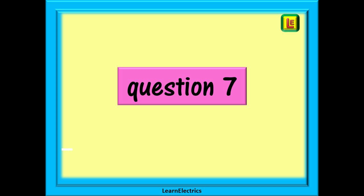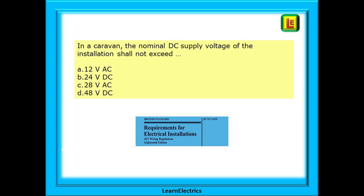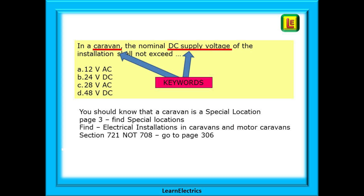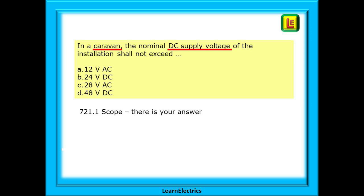Question 7 is next — a question on special locations. The question asks: in a caravan, the nominal DC supply voltage of the installation shall not exceed what? You should know that a caravan is a special location. Go to page 3 and find special locations — it will be shown as 'Electrical installations in caravans and motor caravans'. You are looking for section 721, not section 708. A caravan, section 721, is not the same as a caravan park, section 708 — many people make this mistake. Go to page 306. At the top of the page you will find 721.1 Scope, and there is your answer. You should have selected answer D — 48 volts DC.